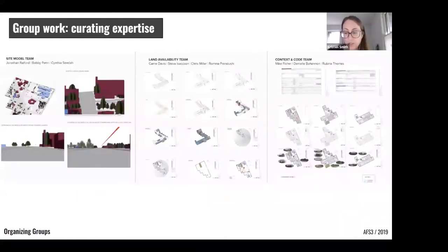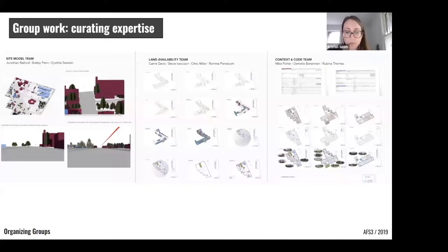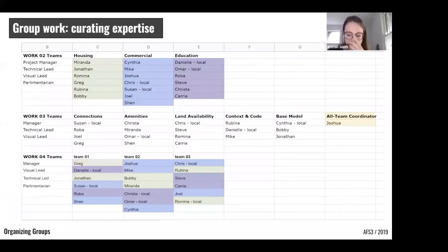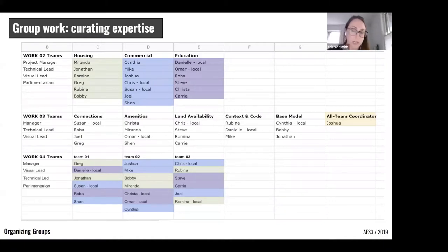Another strategy is to create specialized research teams across the studio, where each group becomes expert in a specific area of knowledge through directed research. This research is then compiled as a shared analysis available to everyone in the class. In AFS-3, the process was aided through a shared template and graphic standards so research had legibility across the work, with an all-team coordinator overseeing work outputs and information transfer between groups. Teams were then remixed into their final groups so that each final project team had one or two experts from each previously investigated topic.